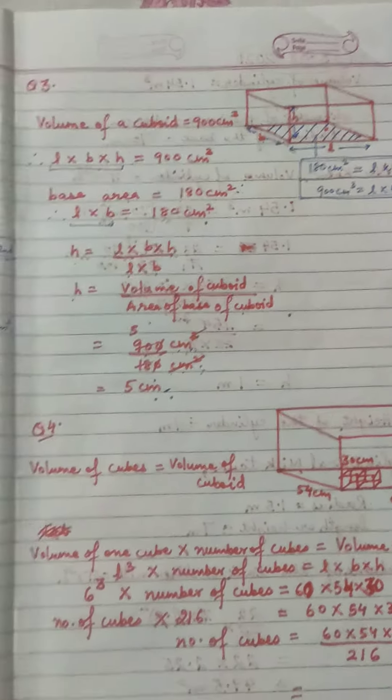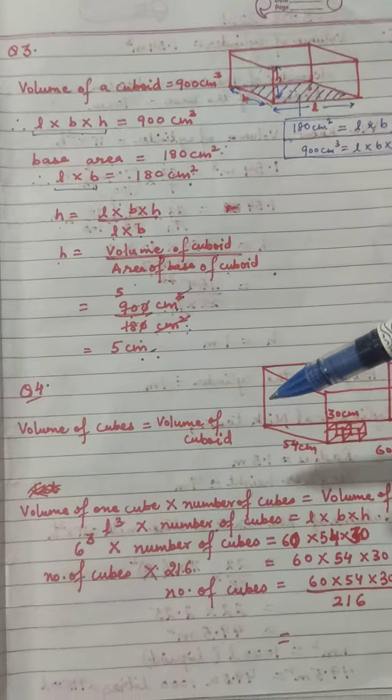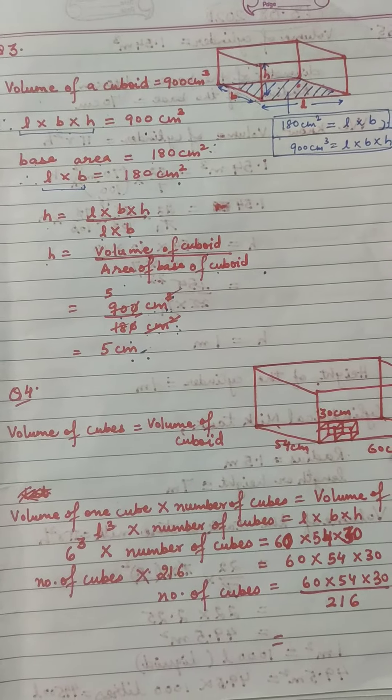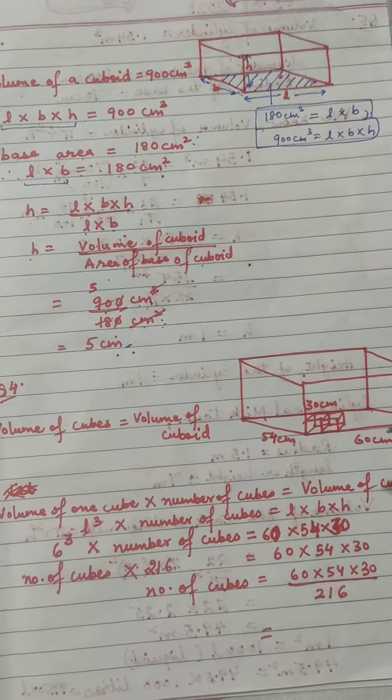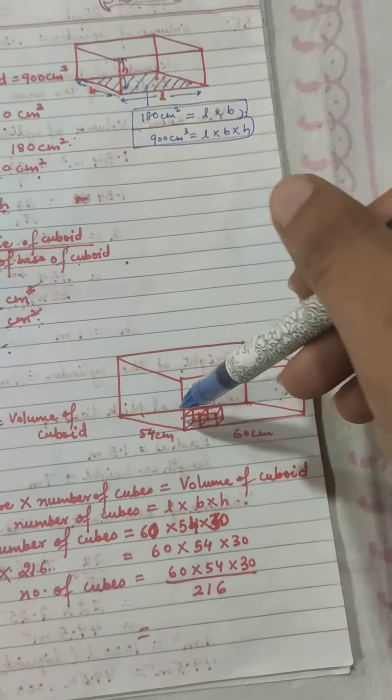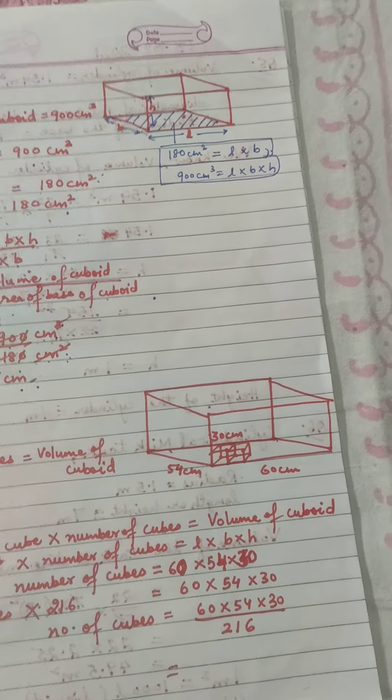Children, now coming to the next question of the same exercise. Question number 4 says a cuboid has dimensions given as length into breadth into height.